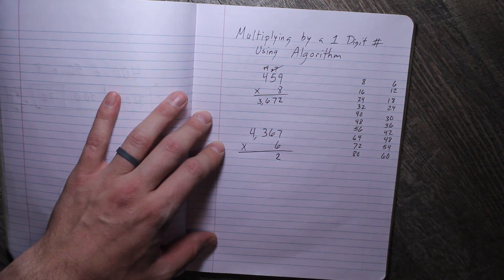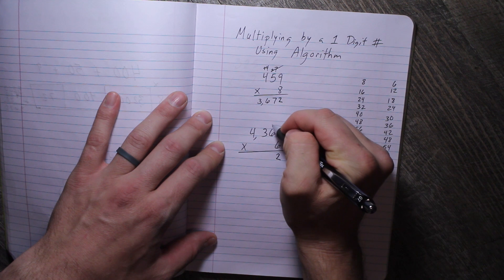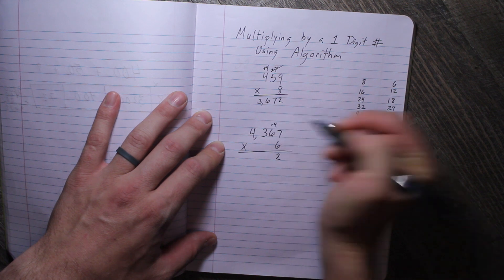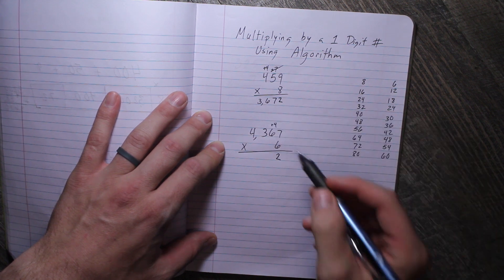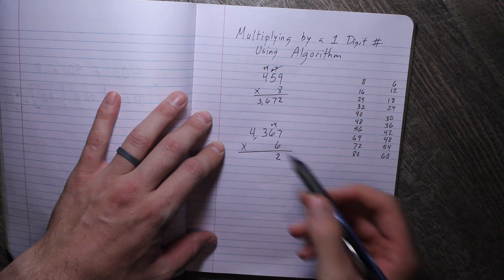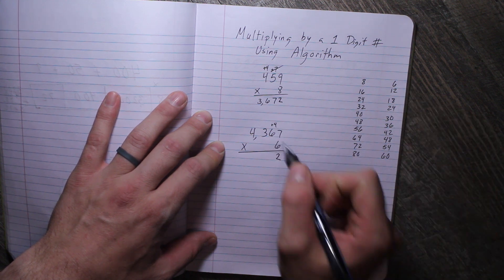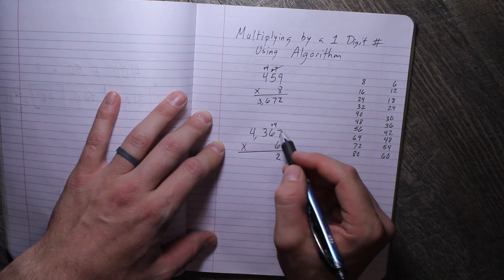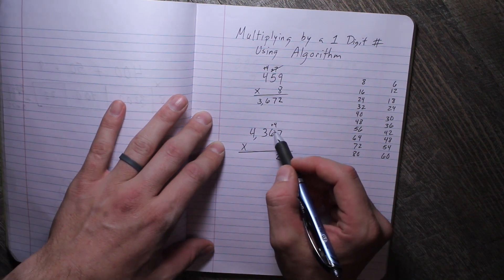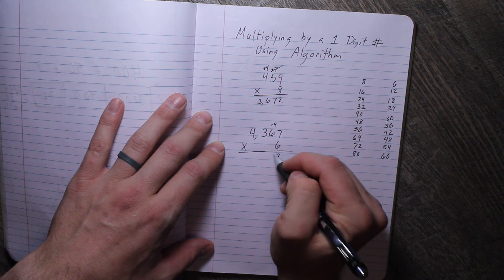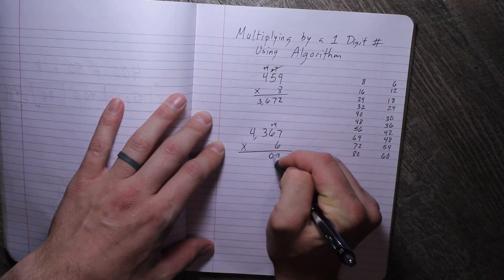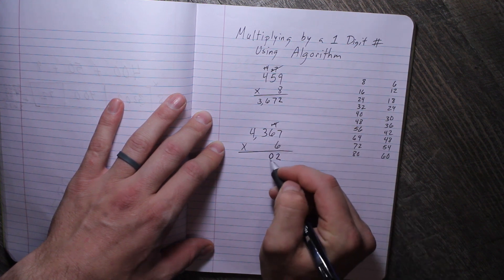6 times 7 is 42. I'll put the 2 in the ones place, but what do I do with that 4? I'm going to put it above the tens place. Now, 6 times 6—because now I'm multiplying the 6—6 times 6 is 36, but wait, we have to add: 36 plus 4 is 40. So I'm going to put a zero here, cross that out.